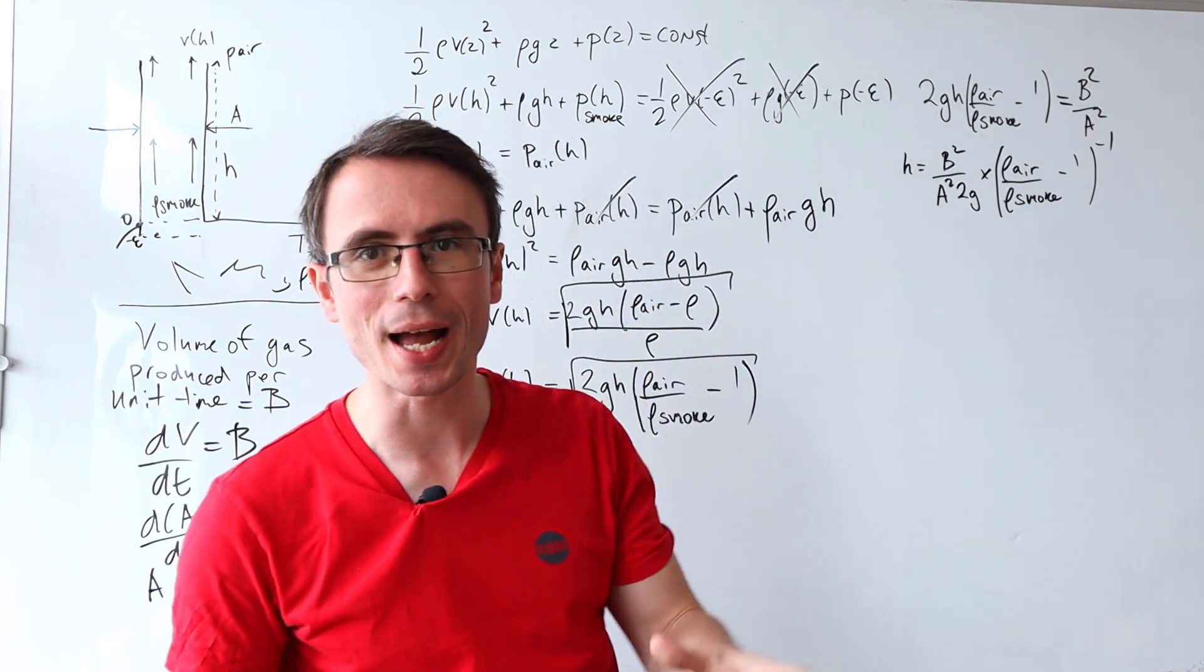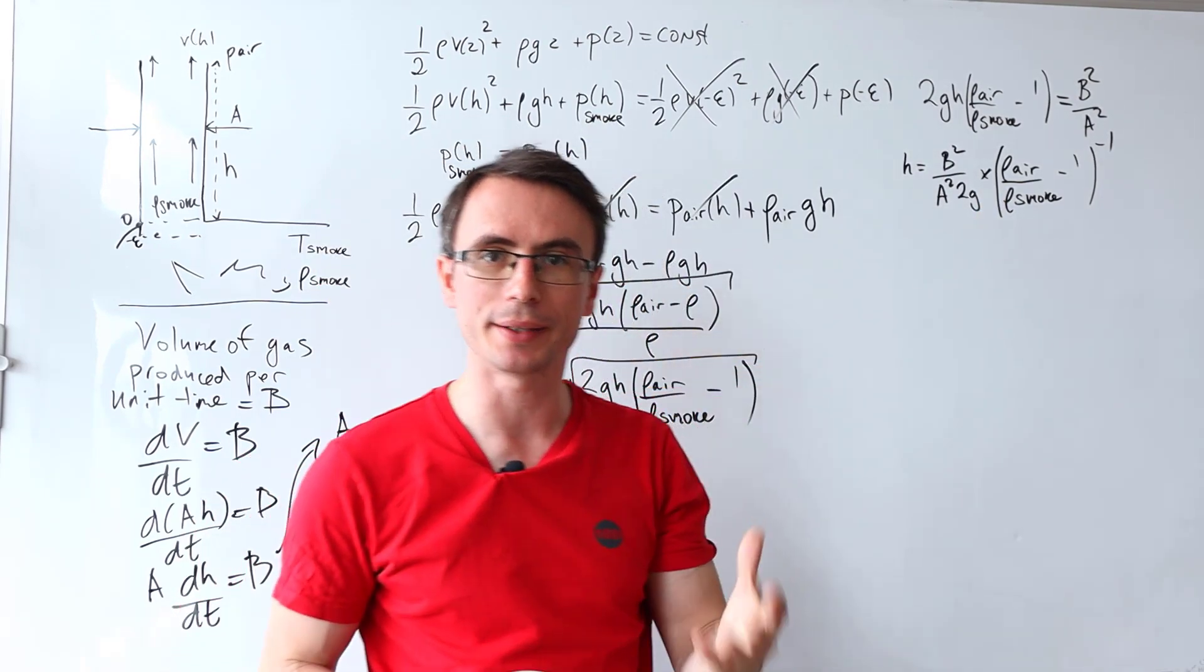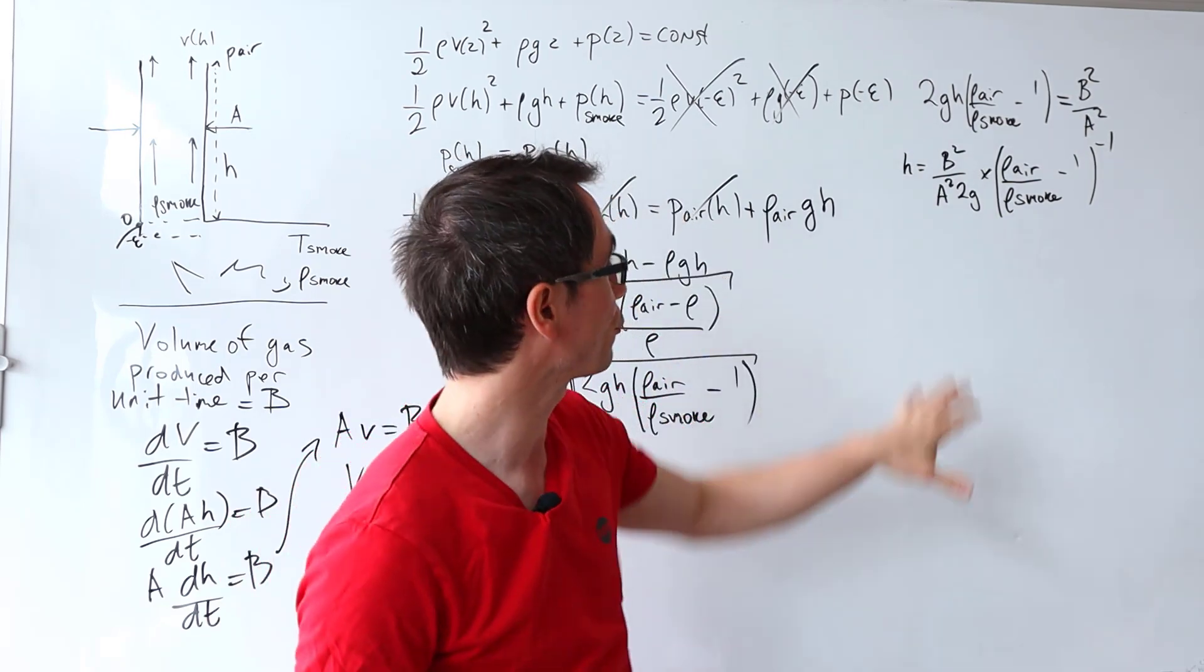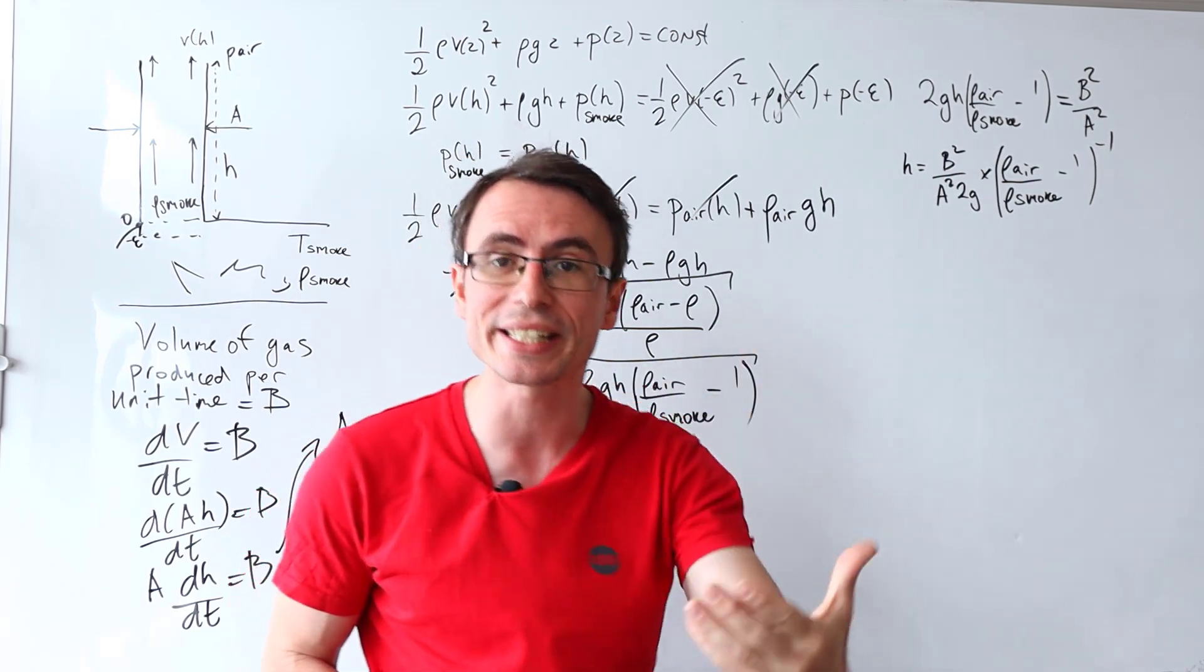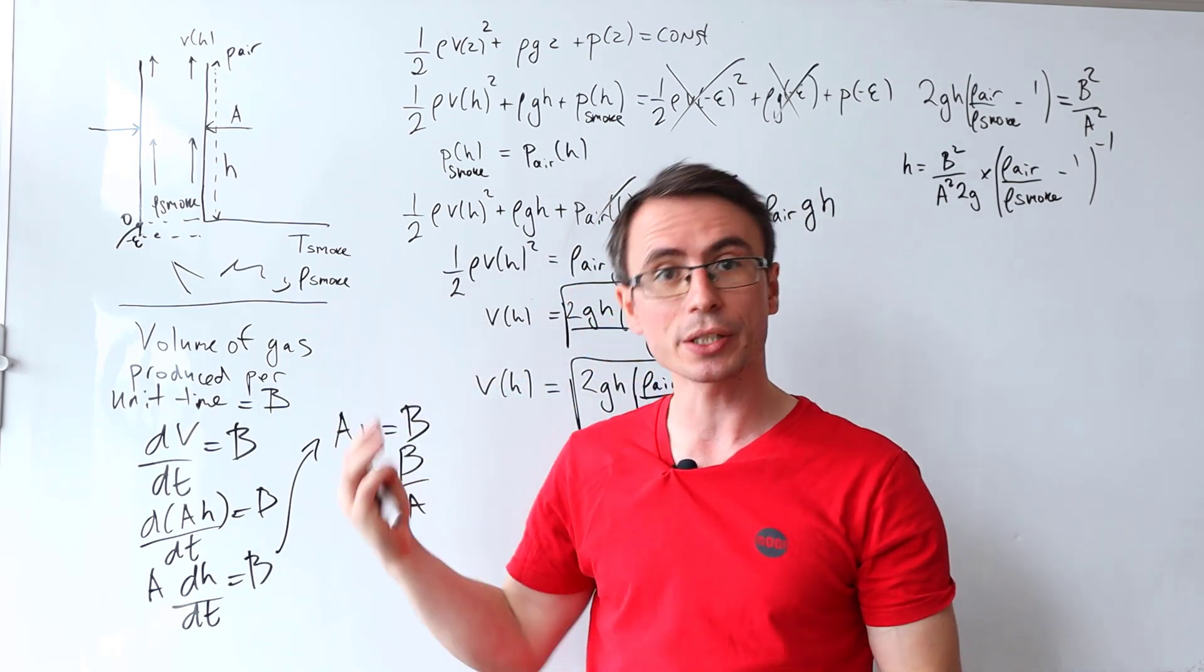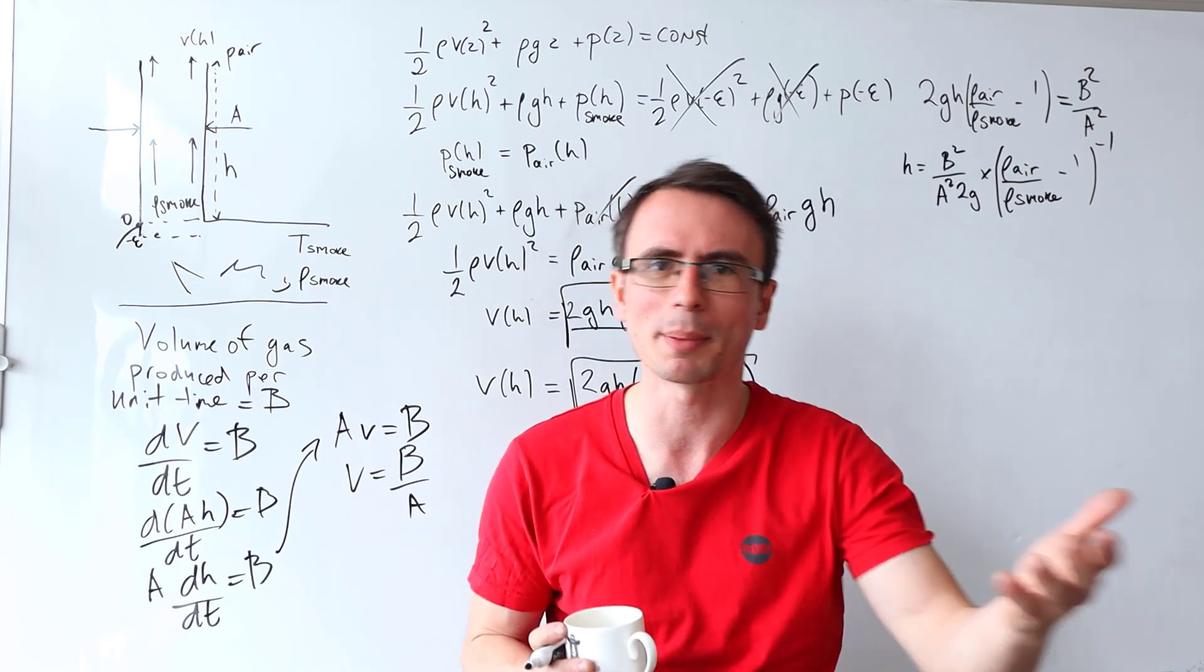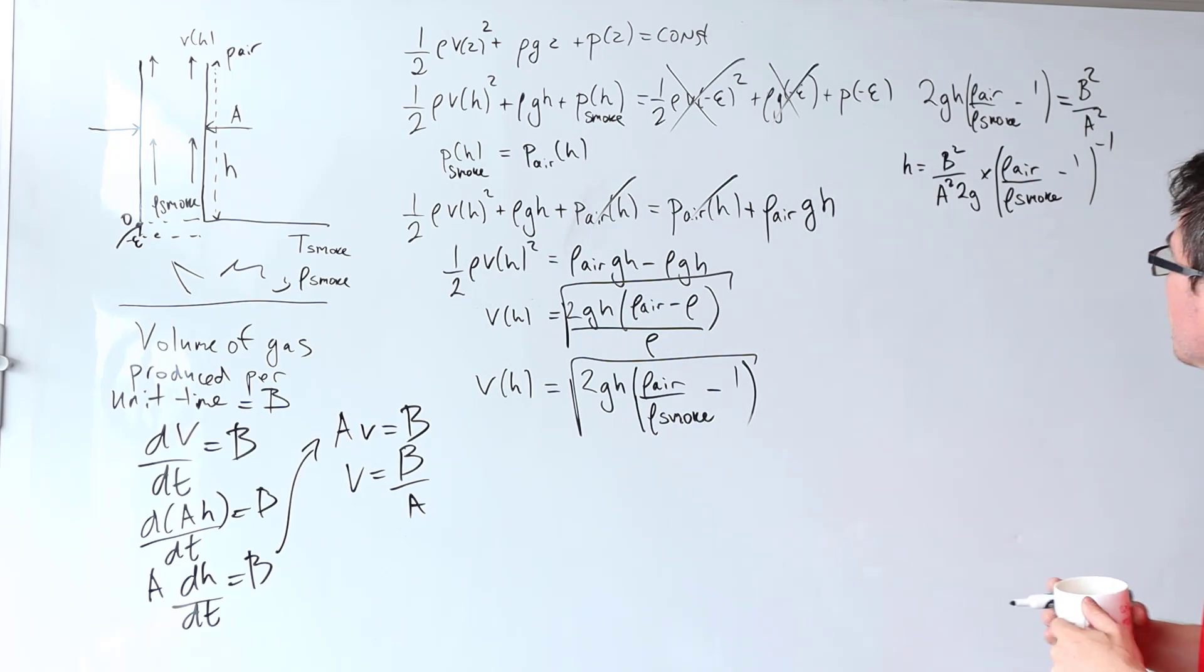Okay, we have an expression for the height in terms of the density of the air and density of the smoke. The question though is asking us to provide this expression for the height in terms of the differences in temperature between the ambient temperature and the temperature of the smoke, which kind of makes sense. If you're building a chimney you probably want to be looking at the temperature gradient and not the differences in density.